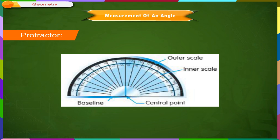The protractor looks like the ones shown on the screen. This is called the baseline of the protractor. This is the inner scale and this is the outer scale. This point is called the central point of the protractor.